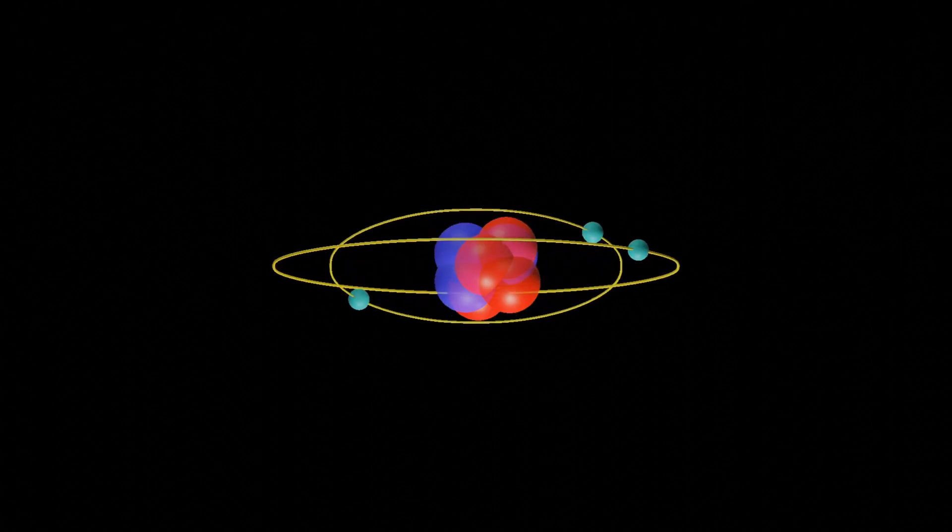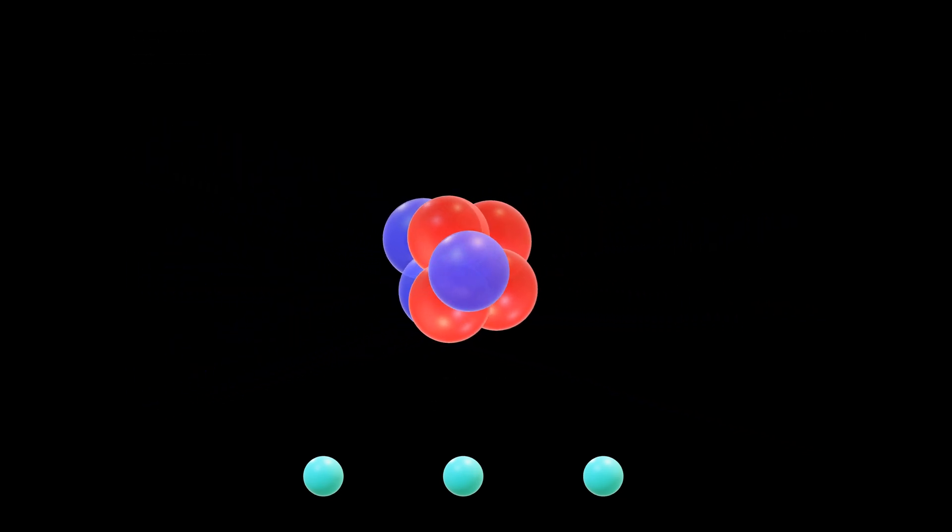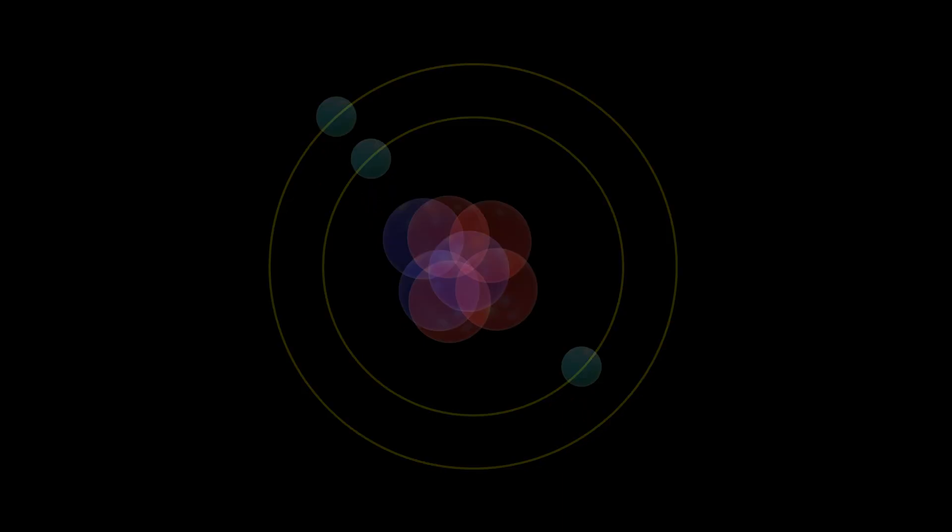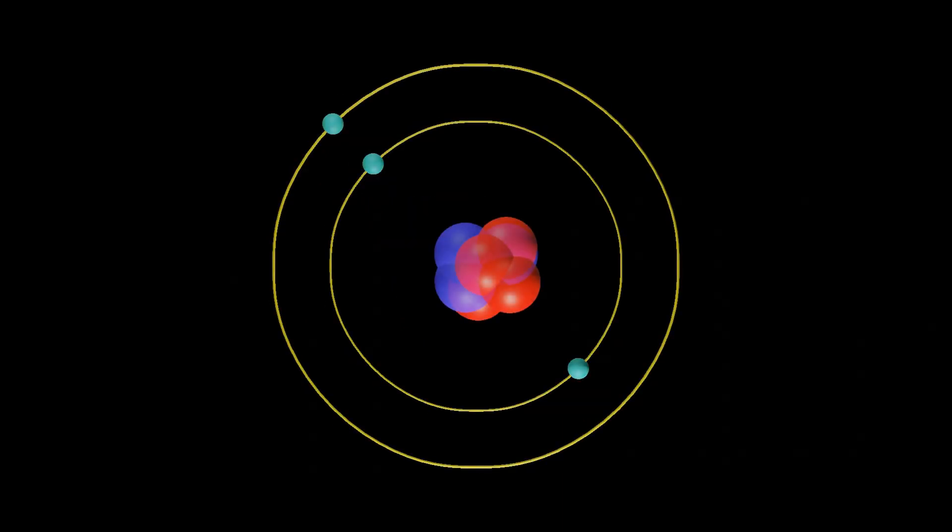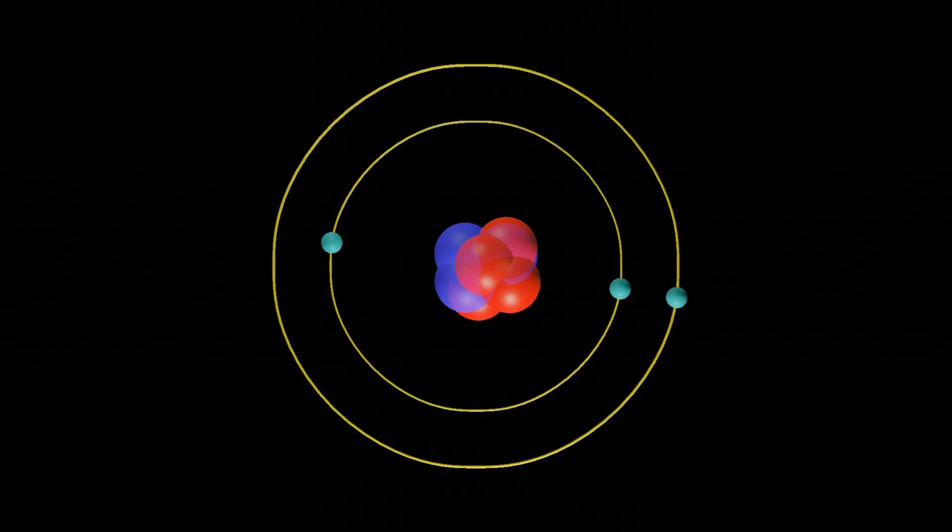The atomic structure of lithium consists of three protons, four neutrons, and three electrons. The protons and neutrons are located in the nucleus of the atom, while the electrons are found in the outermost shell, or valence shell. The arrangement of these particles determines the properties of lithium and other elements.